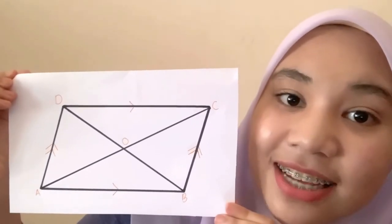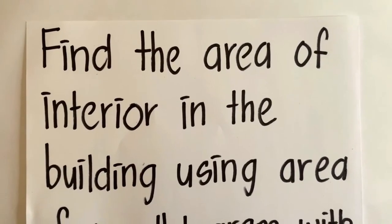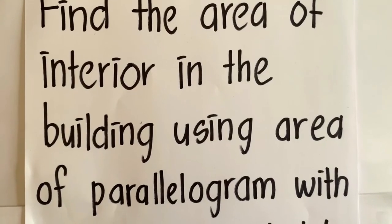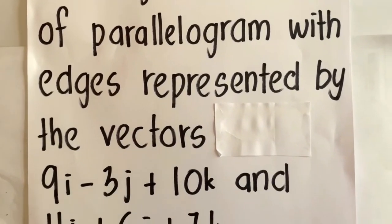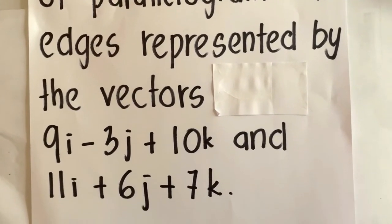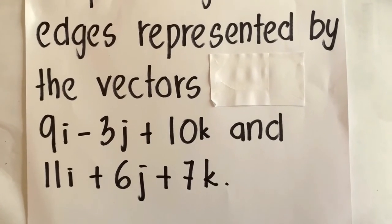Today, I will present to you about the area of parallelogram. But before we go in further, what is the area of parallelogram? The area of parallelogram is the region bounded by the parallelogram in the given two-dimensional space. This is the example for parallelogram. Okay, let's get into Q&A session. The question for today is to find the area of the interior in a building using the area of parallelogram with edges represented by the vector 9i minus 3j plus 10k and 11i plus 6j plus 7k. Alright!